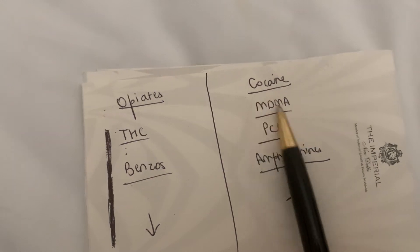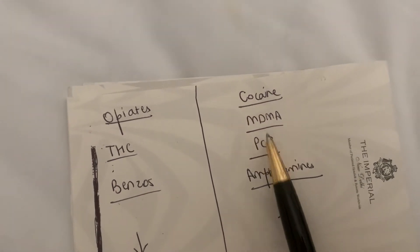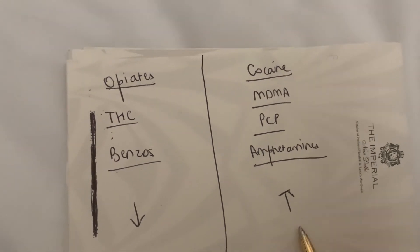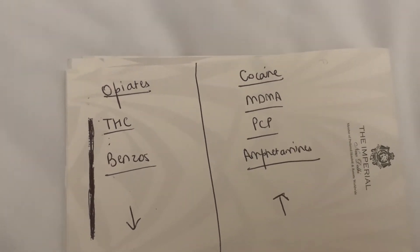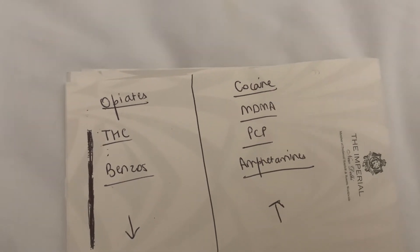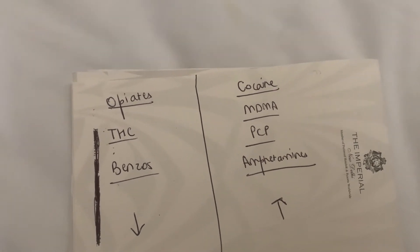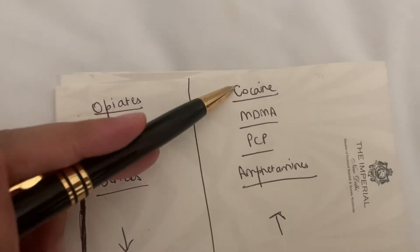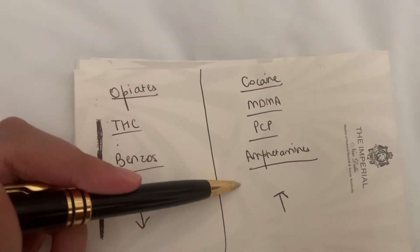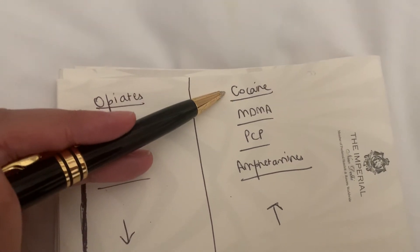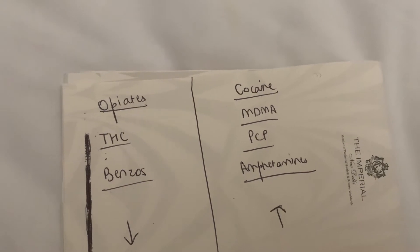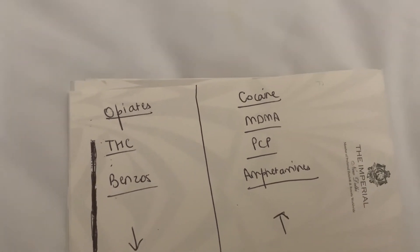Cocaine and MDMA both cause pupillary dilation. Since these are excitatory drugs, they lead to dilated pupils, excitement, psychosis, hypertension, and tachycardia — all the classic stimulant symptoms. To differentiate between them, you need something specific to each. For cocaine, you see psychomotor agitation, tachycardia, pupillary dilation, and hypertension.